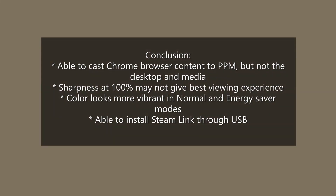In conclusion, I was able to use Chrome to wirelessly cast browser content to PicoPix Max, but was not able to cast the desktop or media. I'm not sure if it's a computer or internet speed issue. The 100% sharpness looks very different from 50% — adjust to whichever level you prefer. Color does look more vibrant in normal and energy saver mode compared to presentation mode, as promised by Philips. I was able to install Steam Link through USB, and the YouTube app with sign-in works pretty well.